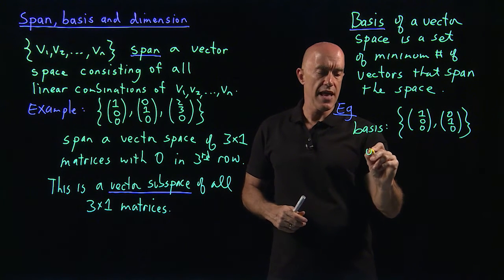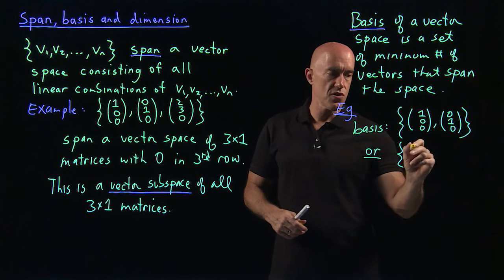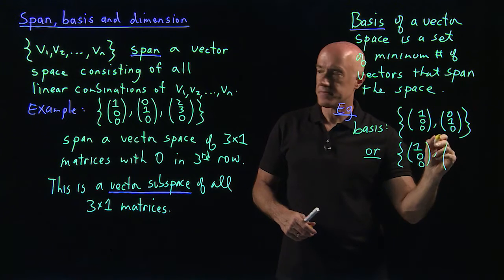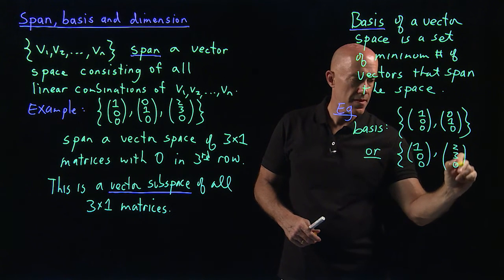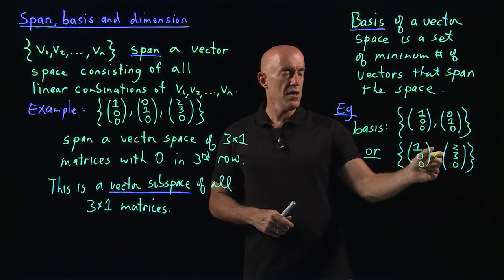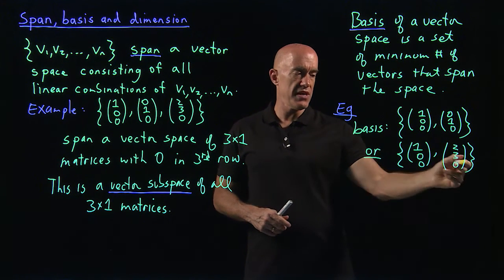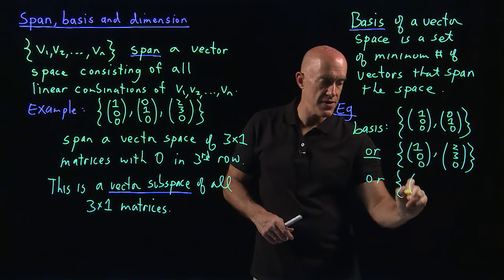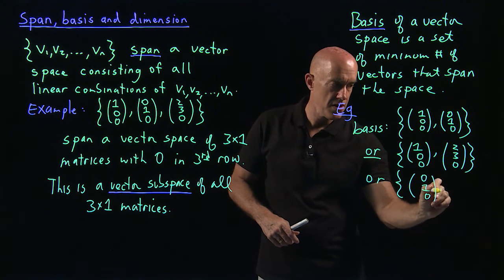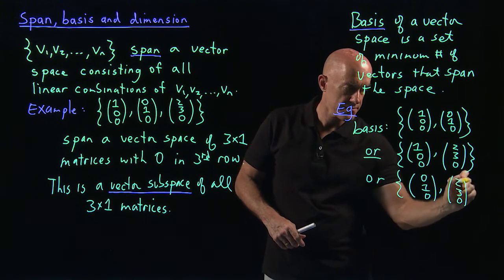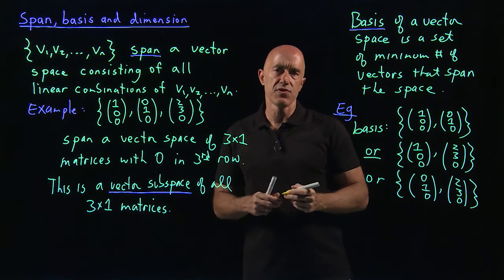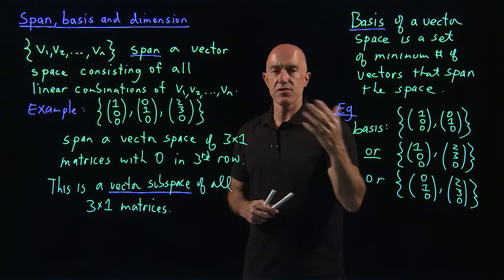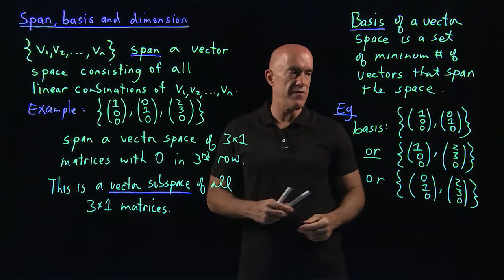But we could use any 2 of these vectors as a basis. It could be (1, 0, 0) and (2, 3, 0) — that can also generate all 3 by 1 vectors with 0 in the third row. Or we can even have (0, 1, 0) and (2, 3, 0). So these 3 sets of 2 vectors all form a legitimate basis for the vector space spanned by these 3 vectors.